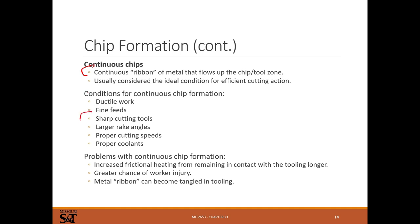Continuous chips — the big curly cues — are really what we want and indicate you're doing things right. These mainly form with ductile materials. The right feed rate (typically less feed), sharp cutting tools, larger rake angles, and proper cutting speeds all help. Cutting speeds can be calculated mathematically — we'll do that math later for milling and turning — but for most purposes you look them up in tables. An experienced machinist can use feel, but looking up tables is the reliable starting point. Coolants and lubrication help significantly.